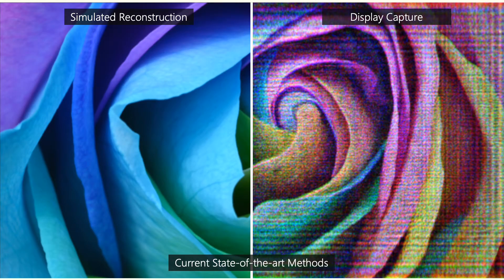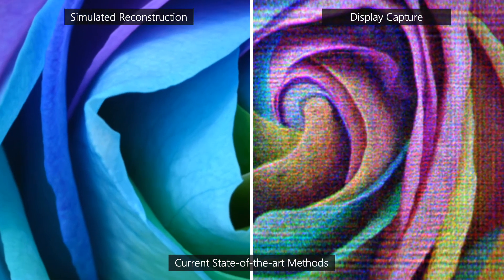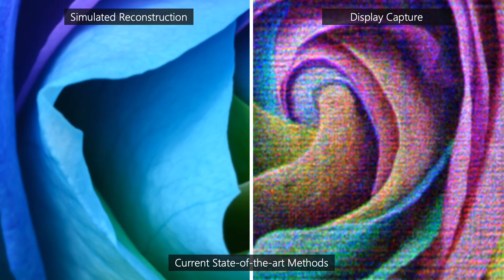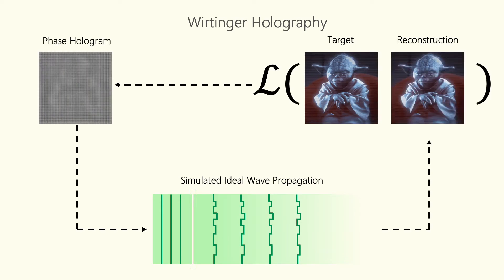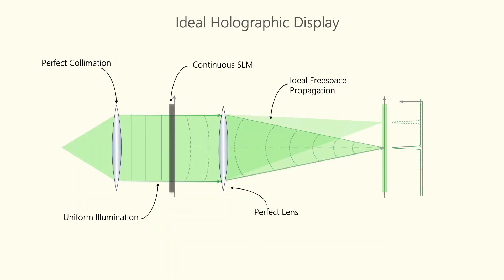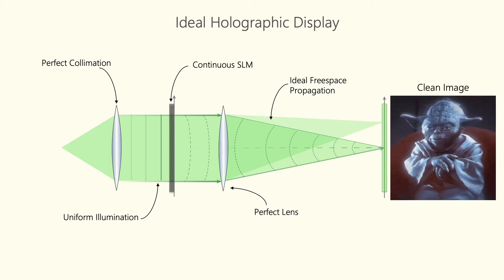Although Wirtinger holography approaches work best in simulation, unfortunately the quality of images on the display is not nearly comparable. Existing state-of-the-art approaches assume ideal wave propagation to optimize for the hologram phase — the hologram phase computation happens only in simulation, and the final computed phase pattern is shown on the display. Such methods implicitly make simplifying assumptions about the display, such as perfect collimation, continuous SLMs, and perfect lenses, which would produce a clean image on the display similar to simulated reconstructions.